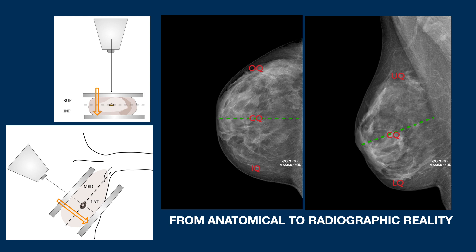From the MLO, leaving aside that it is performed with the tube angled, it is the medial and lateral quadrants that overlap each other. So the only information that we can draw is in the superior and inferior direction — whether the lesion is in the superior, central, or inferior quadrants.